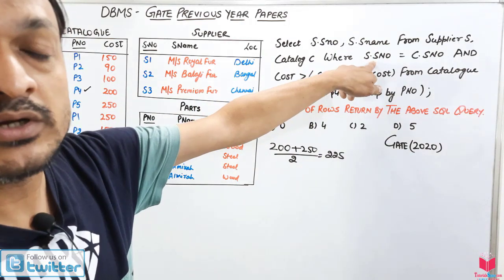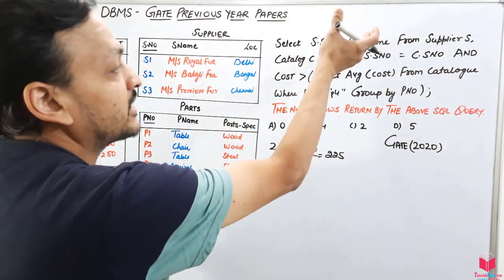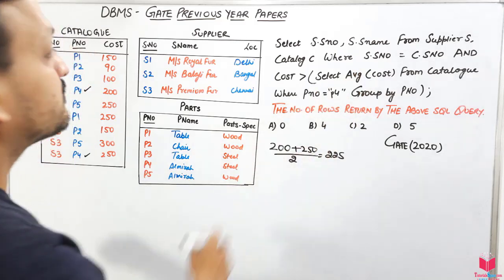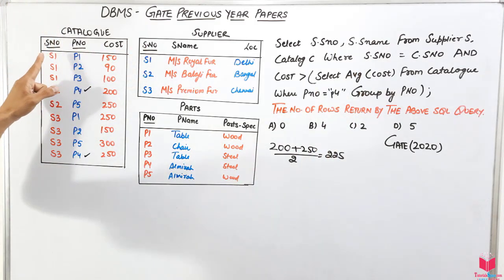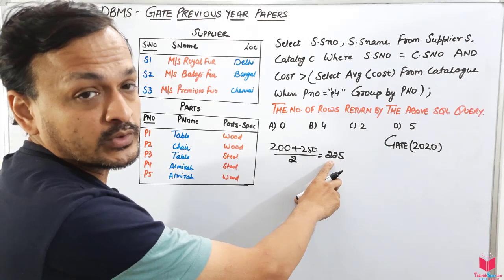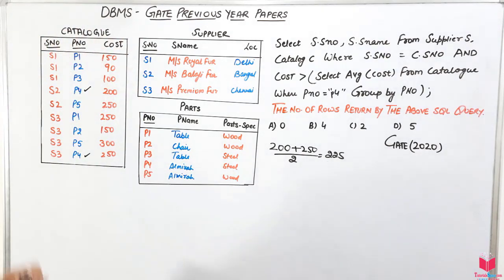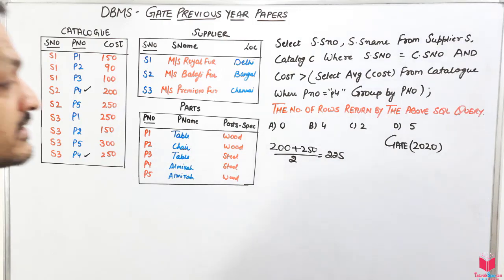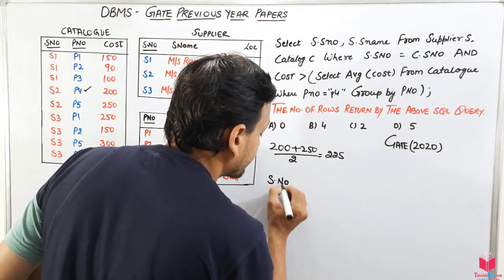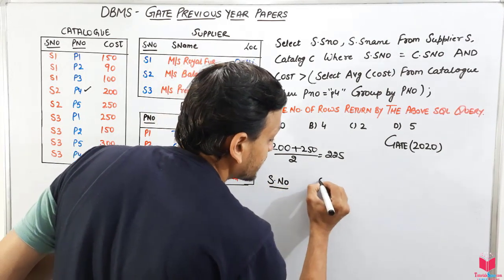The output 225 is now used in the outer query condition. The condition becomes: s.s_number must match c.s_number AND cost must be greater than 225. So we need to find those supplier numbers and supplier names whose associated catalog cost is greater than 225.